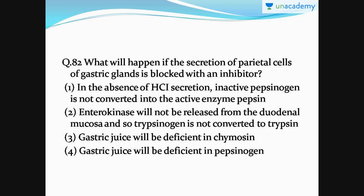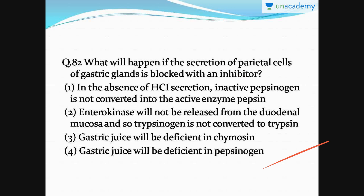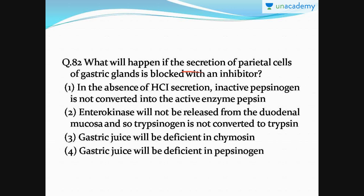Question number 82: what will possibly happen if the secretion of parietal cells of gastric glands is blocked with an inhibitor? The right answer is option number one. Parietal cells secrete HCl, and if HCl secretion is stopped, the enzyme pepsinogen, which is converted into pepsin with the help of HCl, will not be activated, which will affect the digestion process.